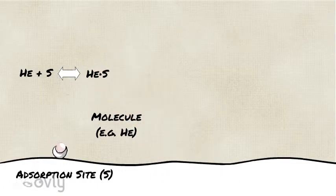The reactants are shown on one side, a two-sided arrow represents that the reaction is reversible, and the product is on the other side — in this case, the occupied site.